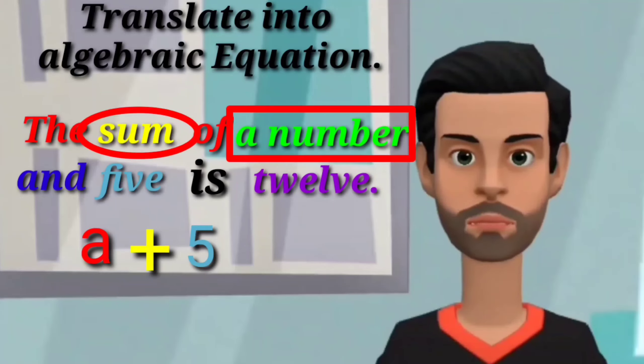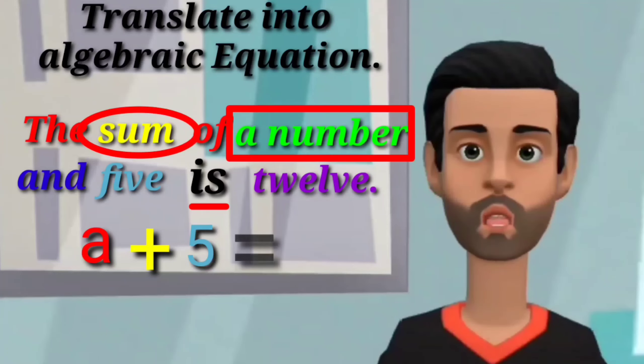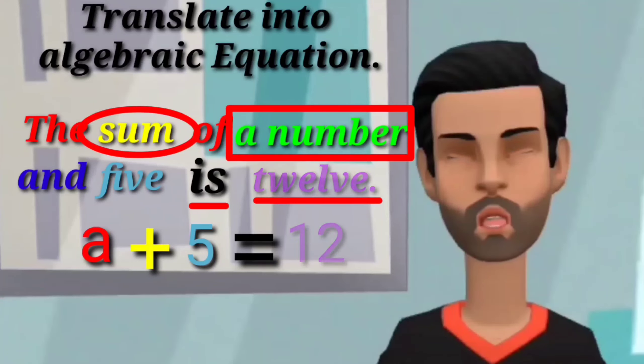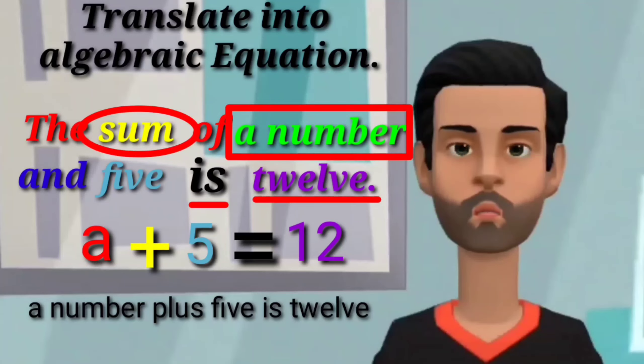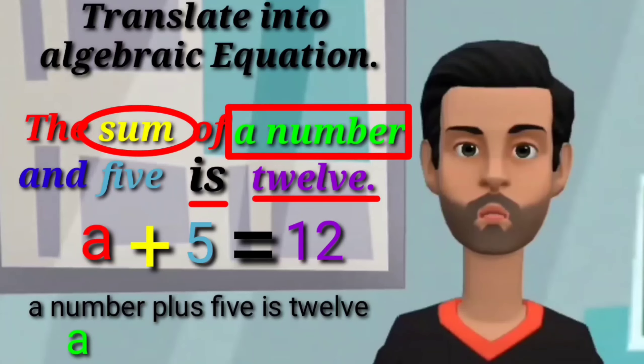A number is also changed into equal symbol, and the word twelve will become twelve in figure. Or I write it in this way: a number plus five is twelve. A number is A.